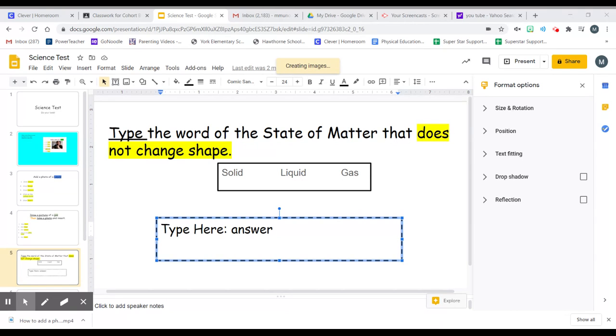So the clue for my answer is highlighted: does not change shape. Now I have choices—is this a solid, a liquid, or a gas? I'm going to think which one of these three states of matter does not change shape.